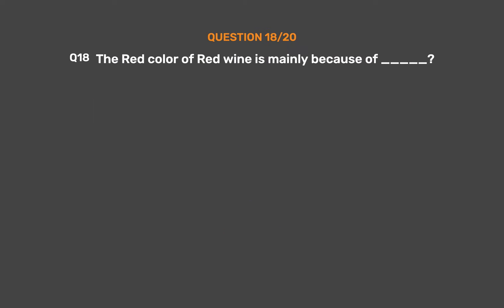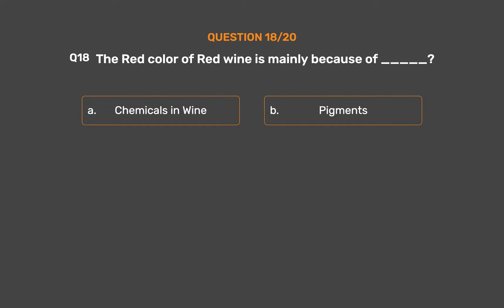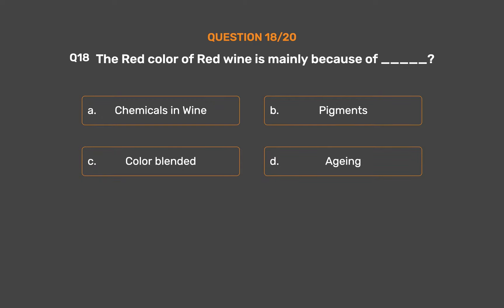Question No. 18. The red color of red wine is mainly because of what? Option A: Chemicals in wine. Option B: Pigments. Option C: Color blended. Option D: Aging. The correct answer is Option B: Pigments.